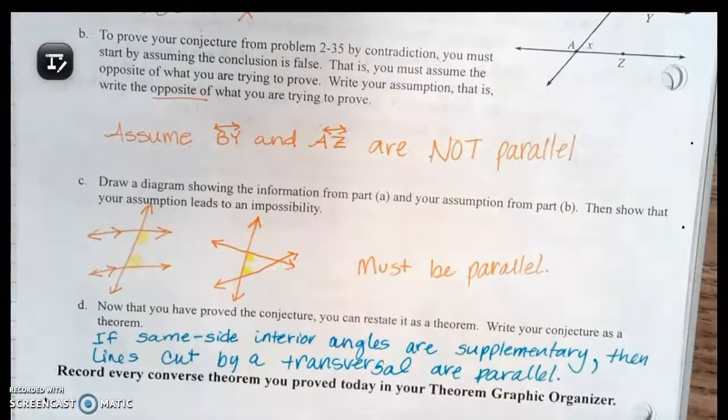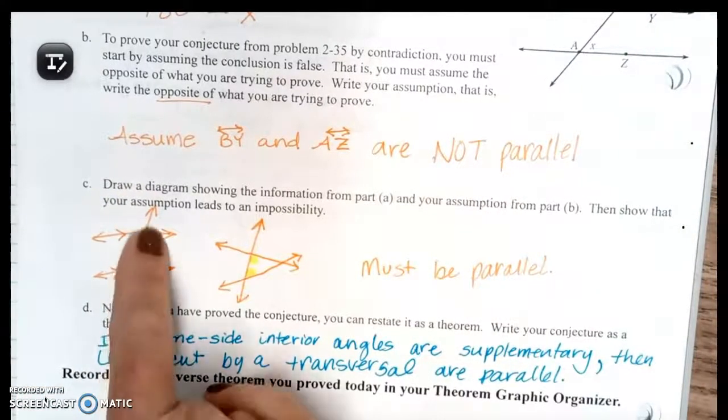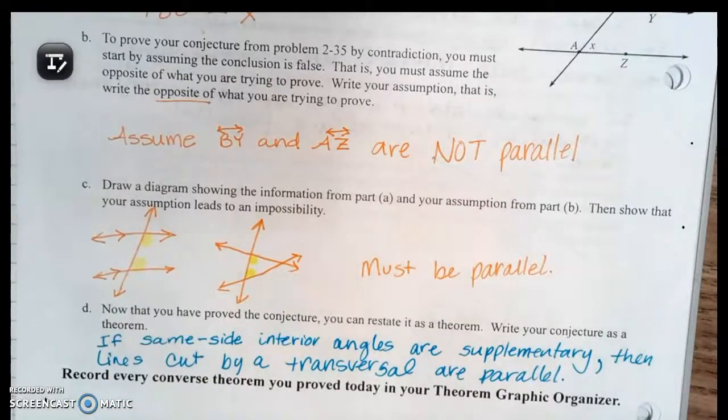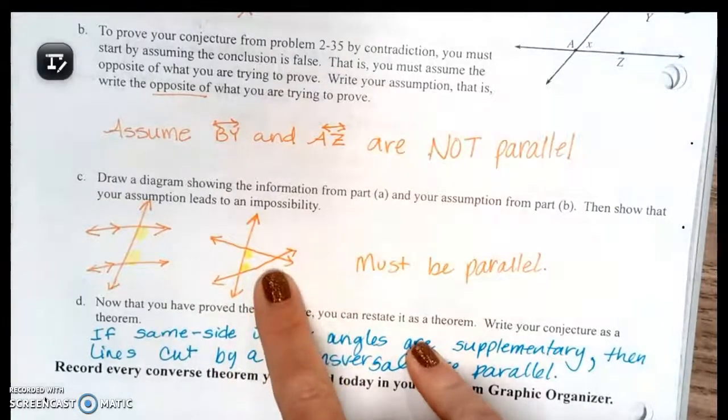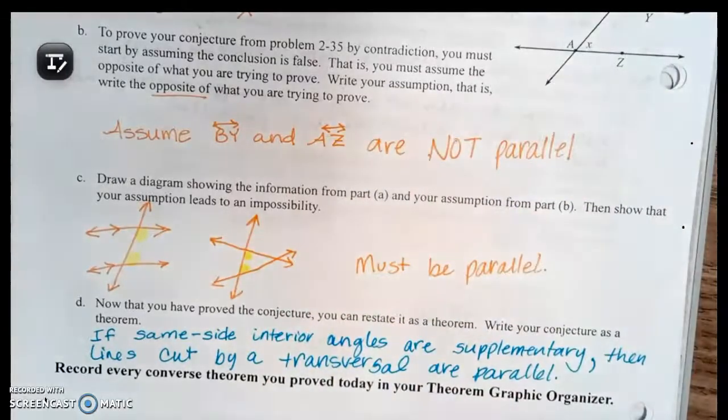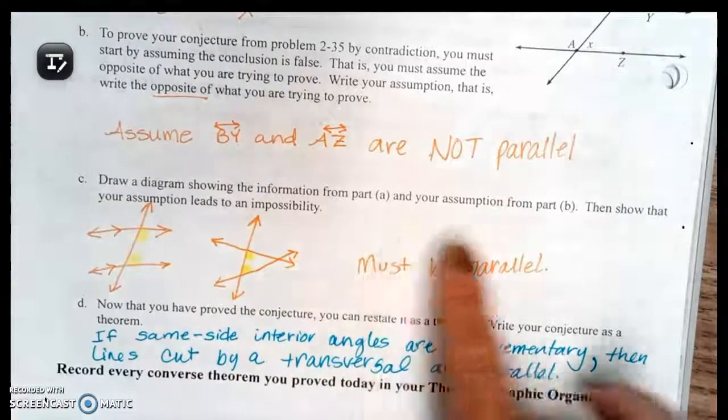For part C they want us to draw a diagram showing the information from part A and your assumption from part B, then show that your assumption leads to an impossibility. If you have two parallel lines cut by a transversal, here's your same side interior angles. They're going to be supplementary. But if those lines are not parallel, the same thing that happened up in question 36 is going to happen. If those two are supplementary, that's going to force that to be zero, so they must be parallel.